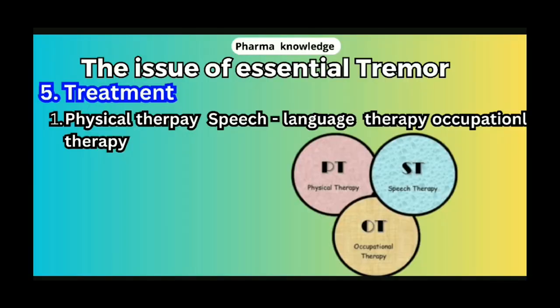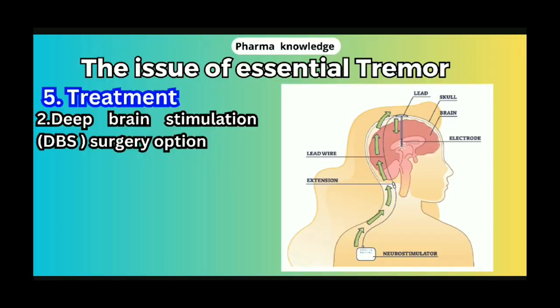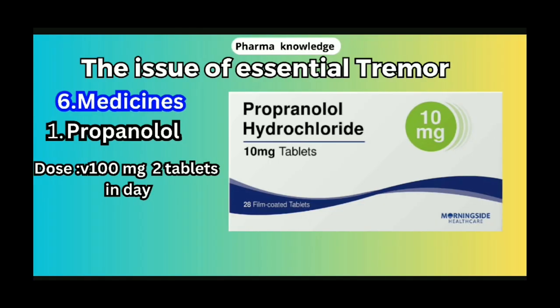The first treatment is Physical Therapy, Speech and Language Therapy, and Occupational Therapy. The second treatment is Deep Brain Stimulation Surgery for patients with severe tremors. Drug treatment is also available.